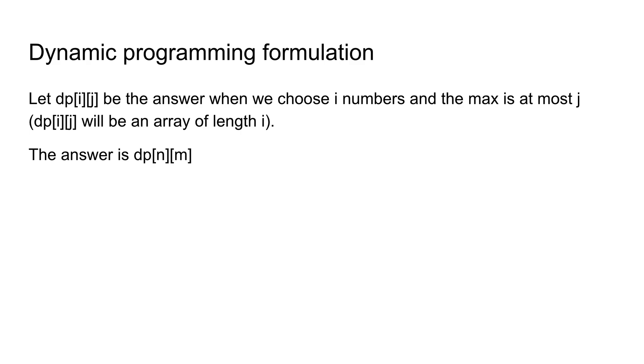In this case, we're going to let dp[i][j] be the answer when we choose i numbers and the max is at most j, and dp[i][j] will be an array of length i. Each element in this array corresponds to the expected value at that position. The final answer is going to be dp[n][m], and again, this is a sequence of n different numbers.